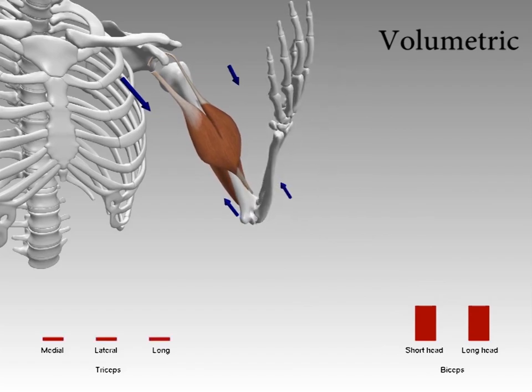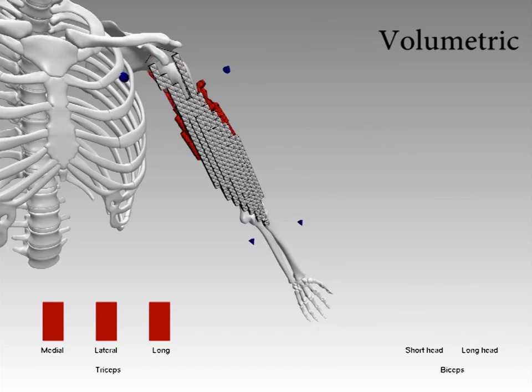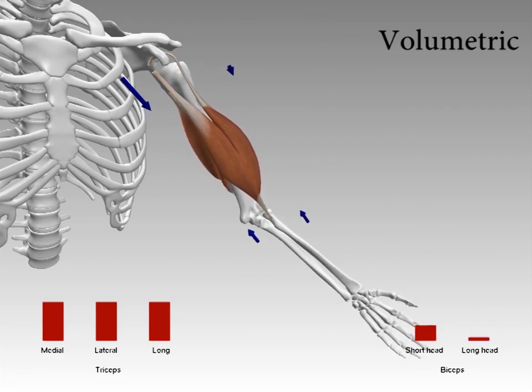The biceps have two motor units at the short head and long head, which can be actuated independently. FEM simulation of the tetrahedral mesh imitates the contraction of human muscles precisely.